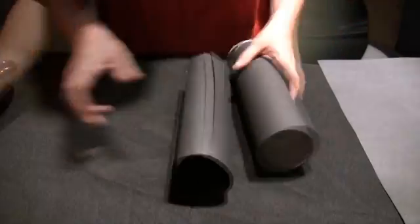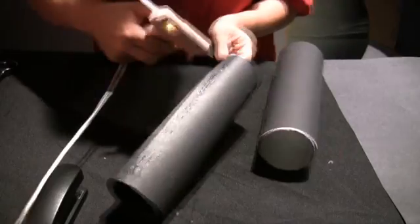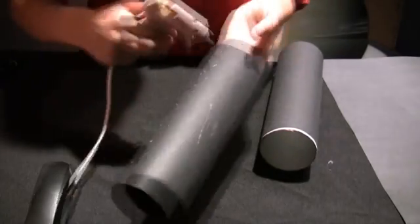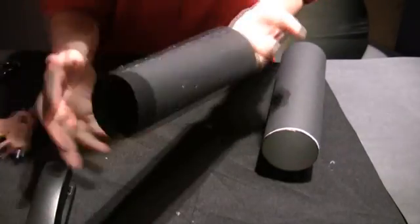Apply hot glue all around the smaller tube, then stick it into the larger one to make sure it doesn't slide around. You should now have your first tube covered in black paper inside and out.